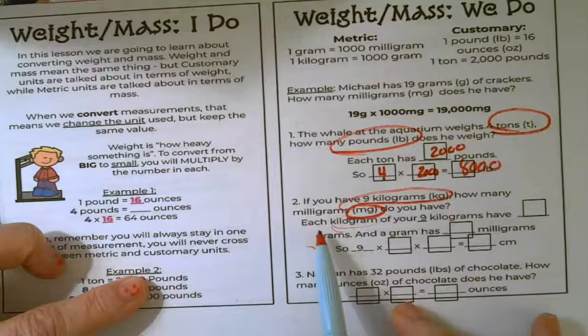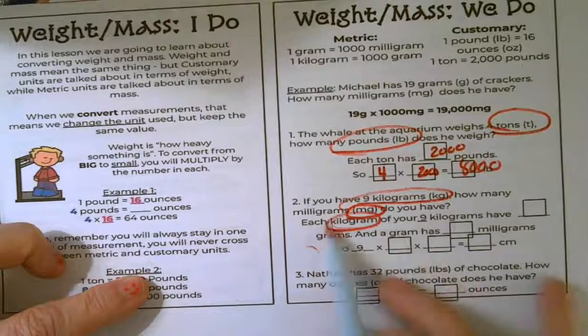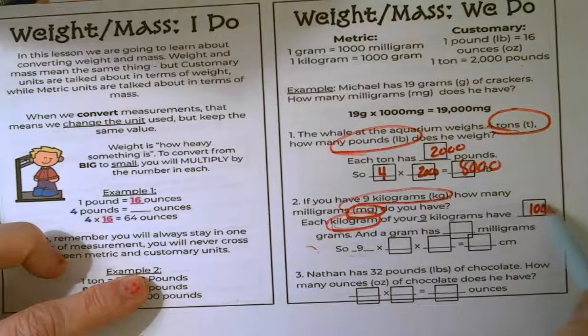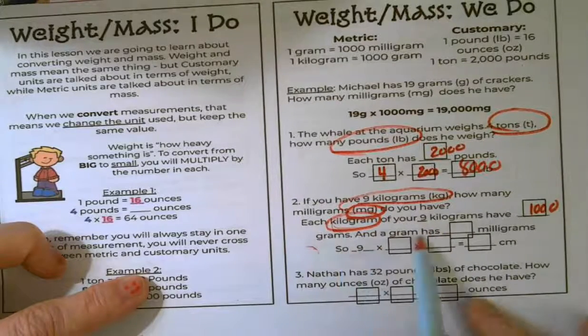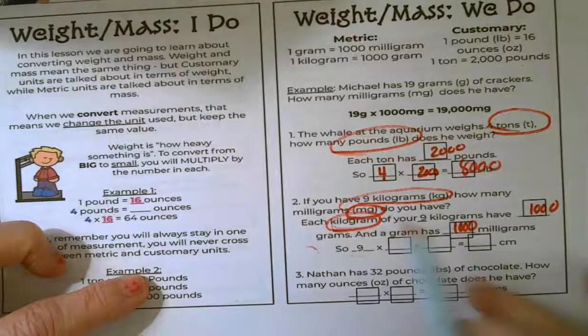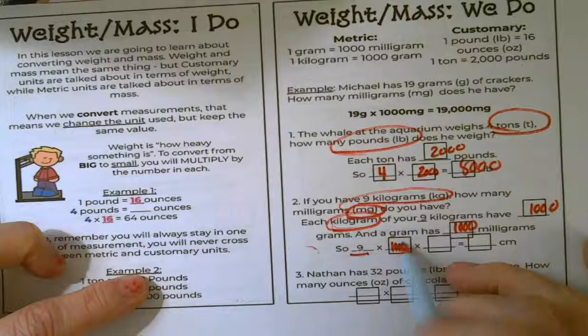And so this guides you through that two-step process. Each kilogram of your 9 kilograms will have 1,000 grams and a gram has 1,000 milligrams. So I'm going to take that 9 and I'm going to multiply it by the 1,000 times 1,000.